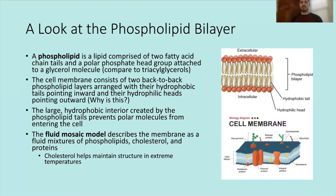The fluid mosaic model describes the membrane as a fluid mixture of phospholipids, cholesterol, and proteins — all bobbing around in an ocean of phospholipids and cholesterol. Fluidity changes with temperature: colder temperatures decrease fluidity, higher temperatures increase it. Cholesterol helps maintain structure in extreme temperatures — in cold temperatures it keeps the membrane more fluid, and in higher temperatures it keeps the membrane more rigid.